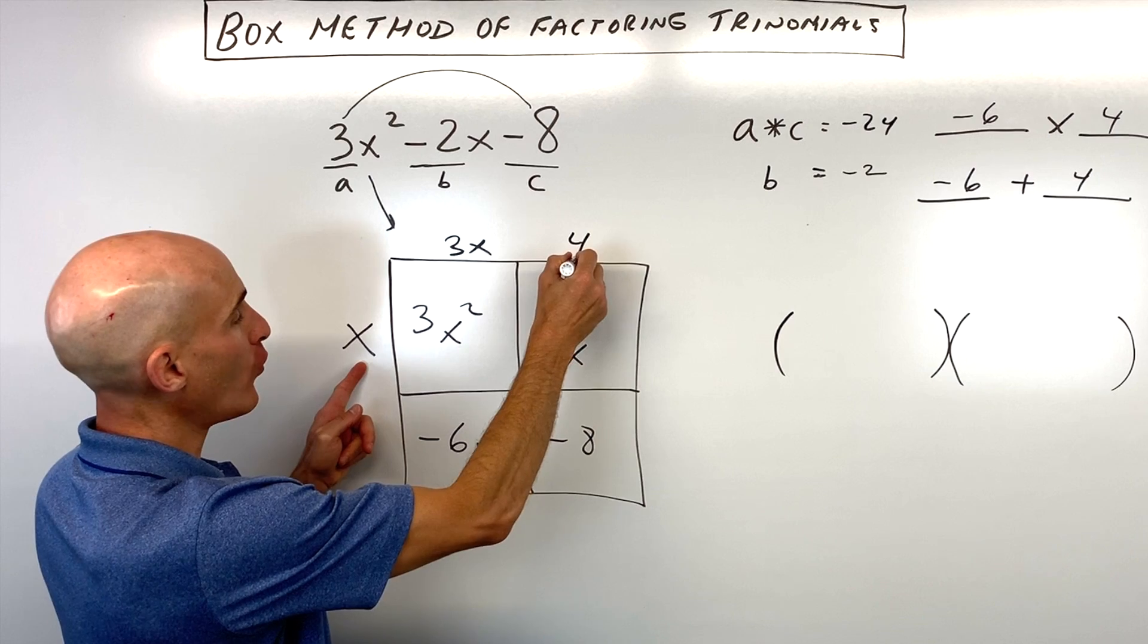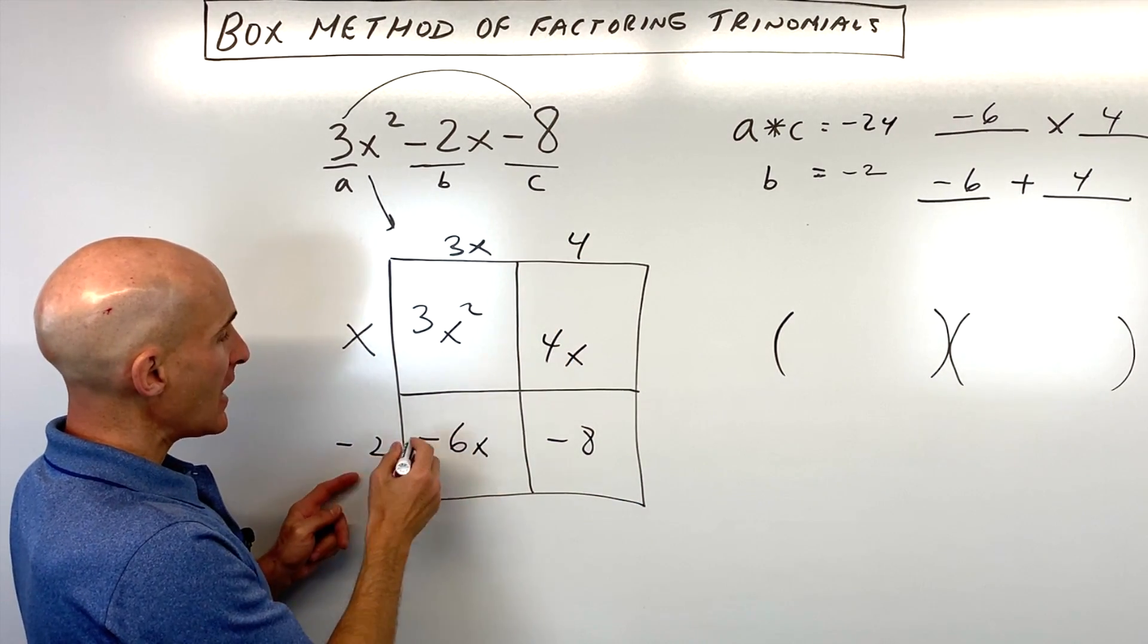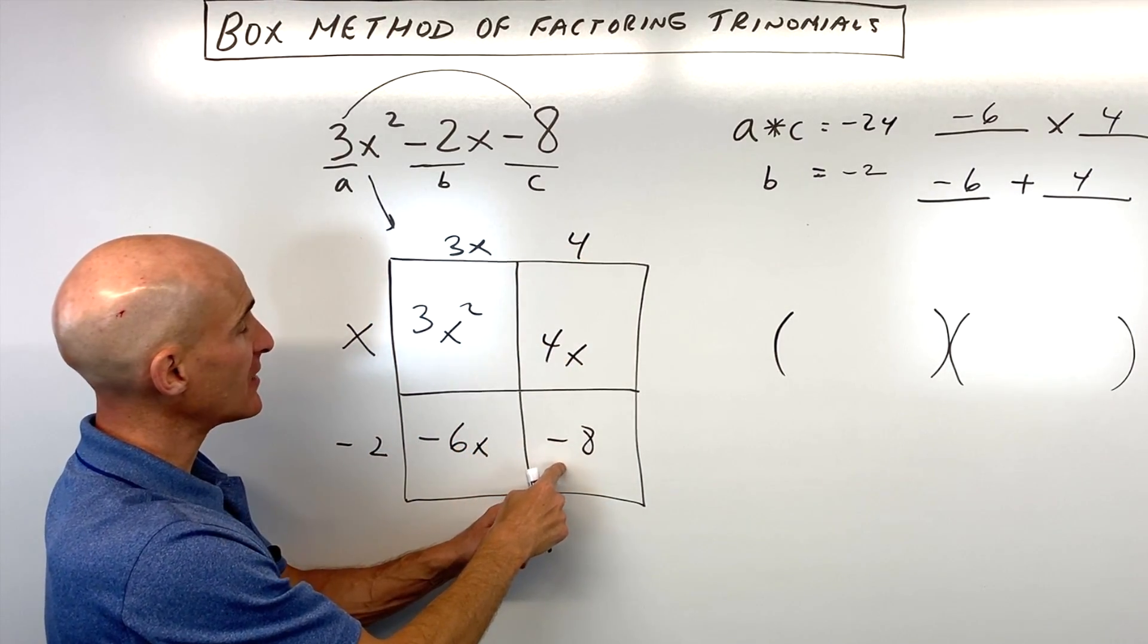And then the greatest common factor in this row is going to be negative 2. And you can see 3x times negative 2 is negative 6x. 4 times negative 2 is negative 8.